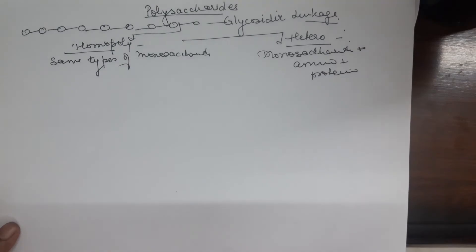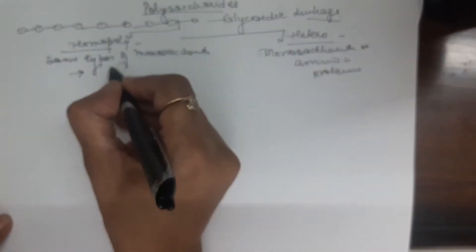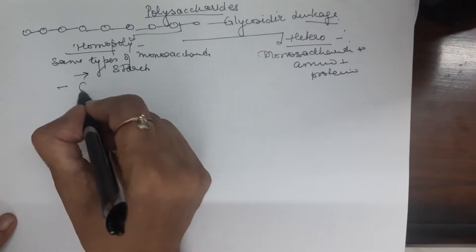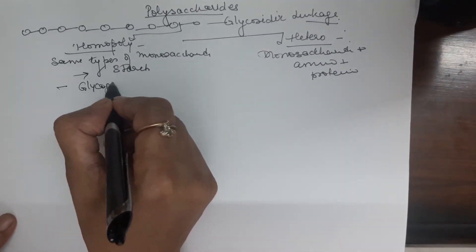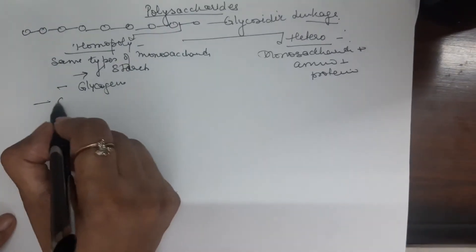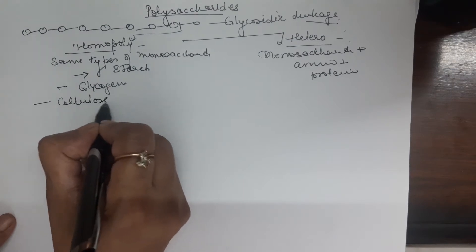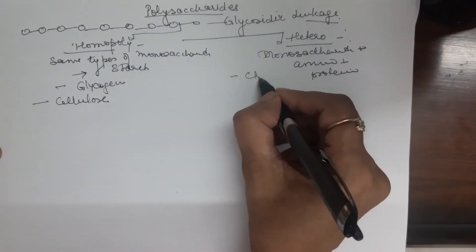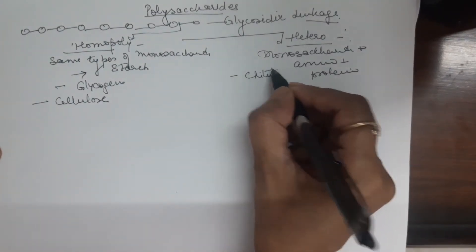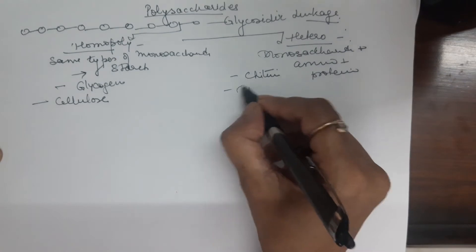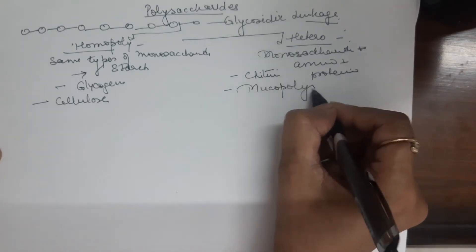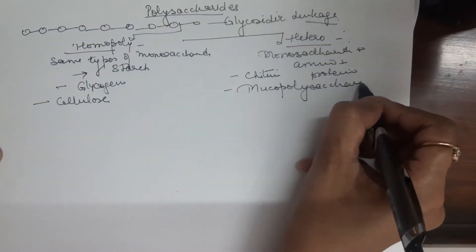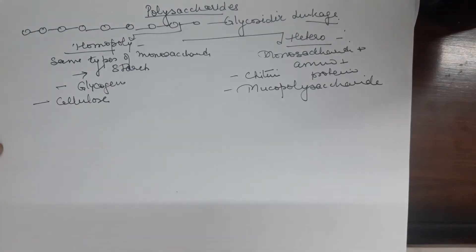The most common homopolysaccharides are starch, glycogen, and cellulose. And some of the common well-known heteropolysaccharides are chitin and mucopolysaccharide. So, let us study about these.